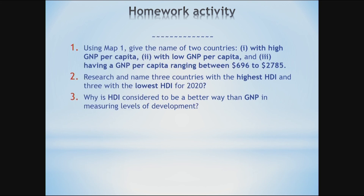For homework: Number one, use Map 1 and give the name of two countries with high GNP per capita, two countries with low GNP per capita, and two countries having a GNP per capita ranging between $696 to $2,785. Number two, research and name three countries with the highest HDI and three with the lowest HDI for 2020. Number three, why is HDI considered to be a better way than GNP in measuring levels of development?